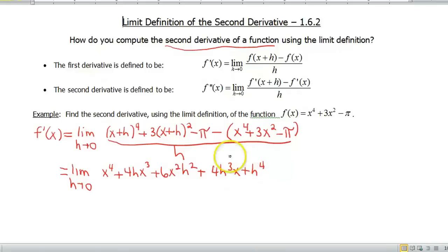plus 6x squared h squared plus 4h cubed x plus h to the fourth. I hope I don't run out of room. Okay, now we're gonna have to multiply out the x plus h squared.